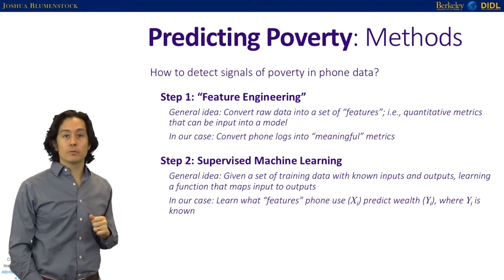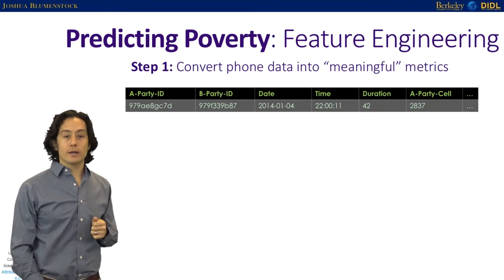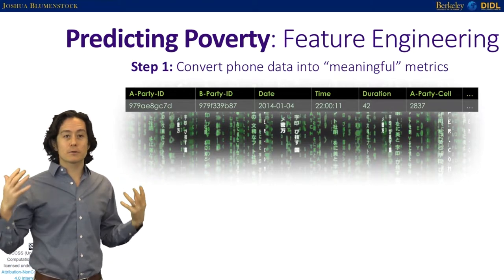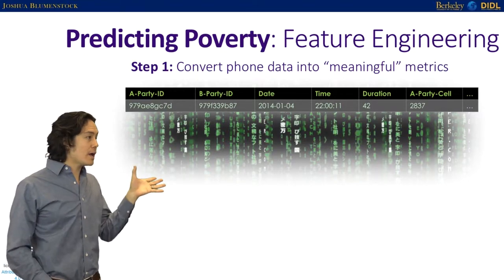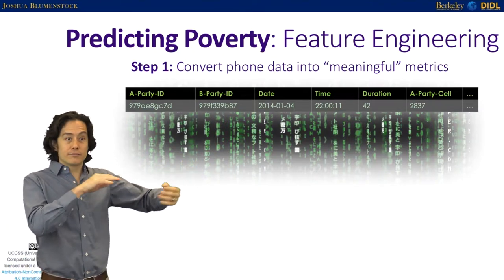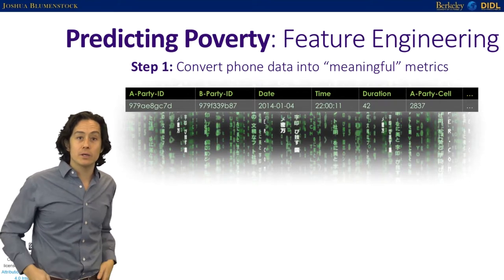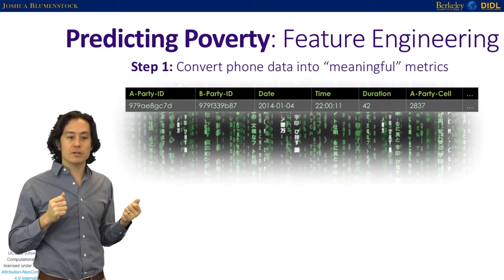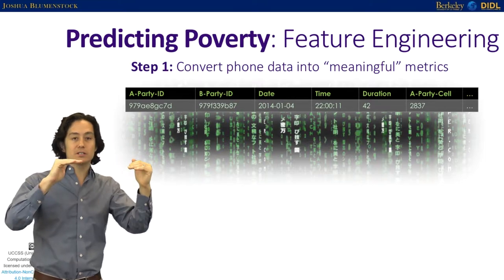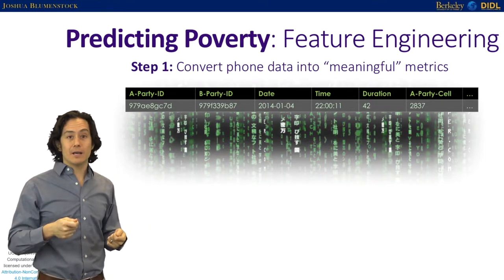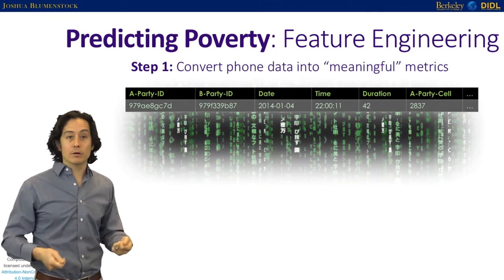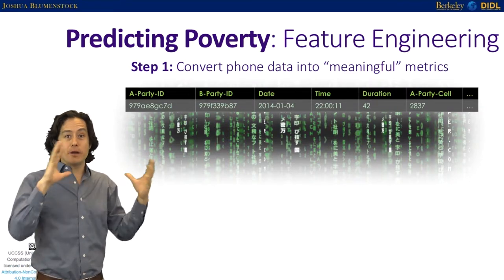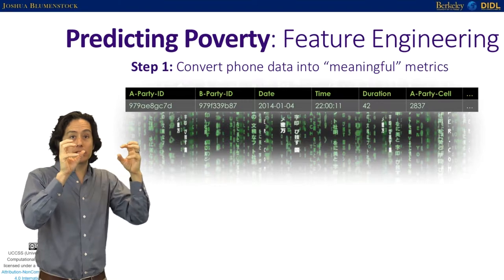For feature engineering with phone data, the goal is to convert raw phone data into meaningful, interpretable metrics describing phone use. What you're looking at is one row of several billion that exist in the transaction logs we get from the mobile phone company. The mobile phone company logs every event — every phone call, every text message — because they need that data to bill customers and keep track of their books.